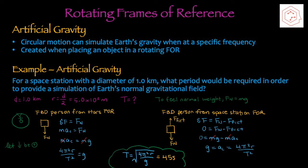Another important concept is artificial gravity. Circular motion can simulate Earth's gravity when rotating at a specific frequency, created by placing an object in a rotating frame of reference. Moving on to an example of artificial gravity.